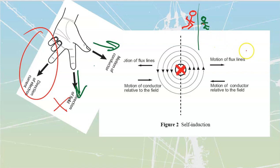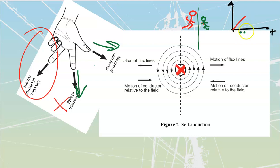But as soon as we start to drop our current, we're going to see a reversal of this entire process. Let's put up a little graph — amps on one axis, time on the other. When current was rising, we had that counter-current coming back towards us. Then when we reach a steady amount of current, we no longer have any lines of flux pushing out, so we're not cutting through the conductor and not inducing any values of voltage.